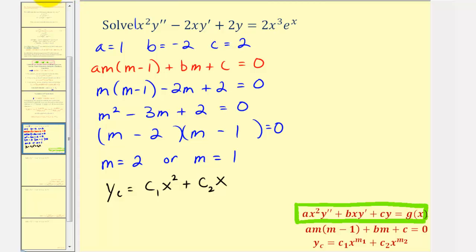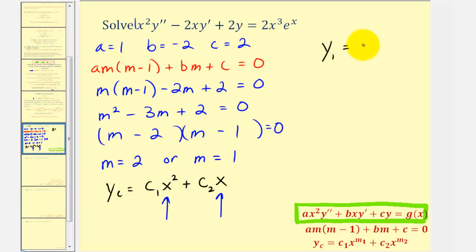So we now know that y sub c is equal to c sub one x squared plus c sub two x. This also tells us, for the variation of parameters method, y sub one is equal to x squared, and y sub two is equal to x. And now before we find big y sub p, our particular solution, let's review the method of variation of parameters.